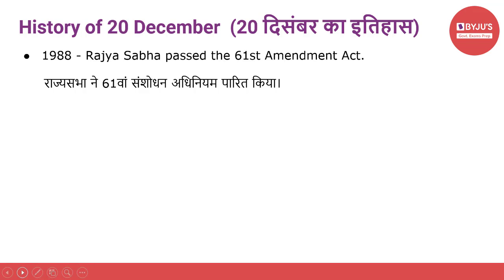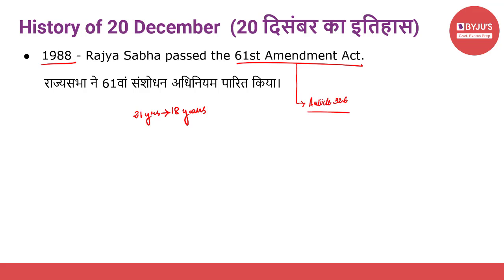Our next event is from 1988, when the Rajya Sabha passed the 61st Amendment Act. On 20 December 1988, the Rajya Sabha passed the 61st Amendment Act. This amendment reduced the minimum voting age from 21 years to 18 years. This amendment bill was introduced to amend Article 326 of the Indian Constitution, which deals with elections to the houses and state legislative assemblies on the basis of universal adult suffrage.